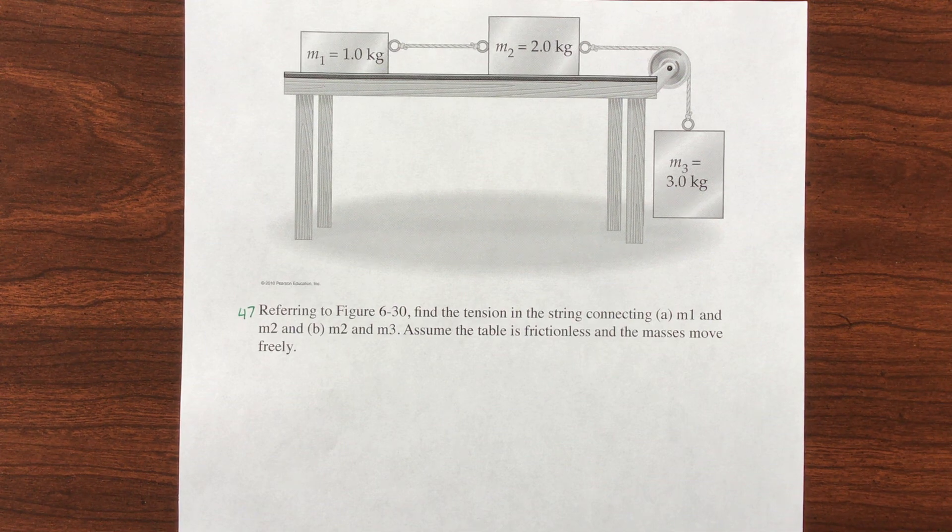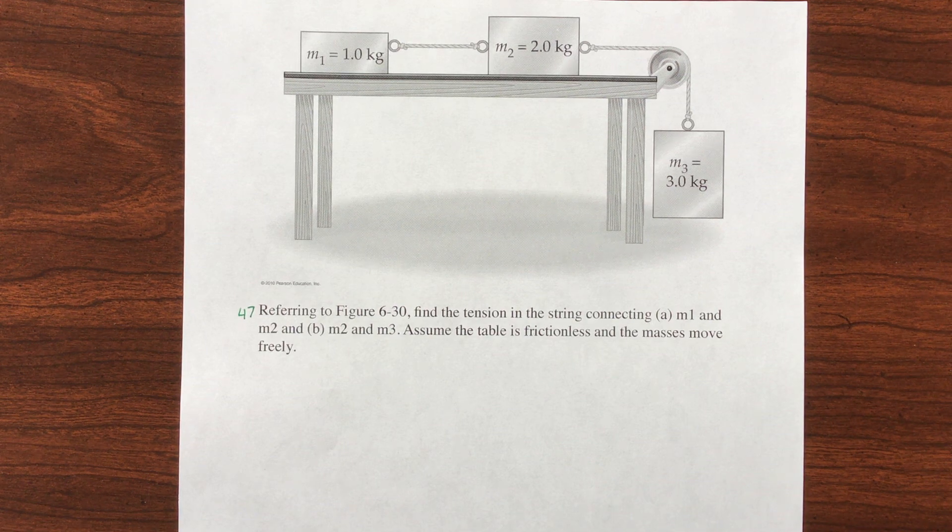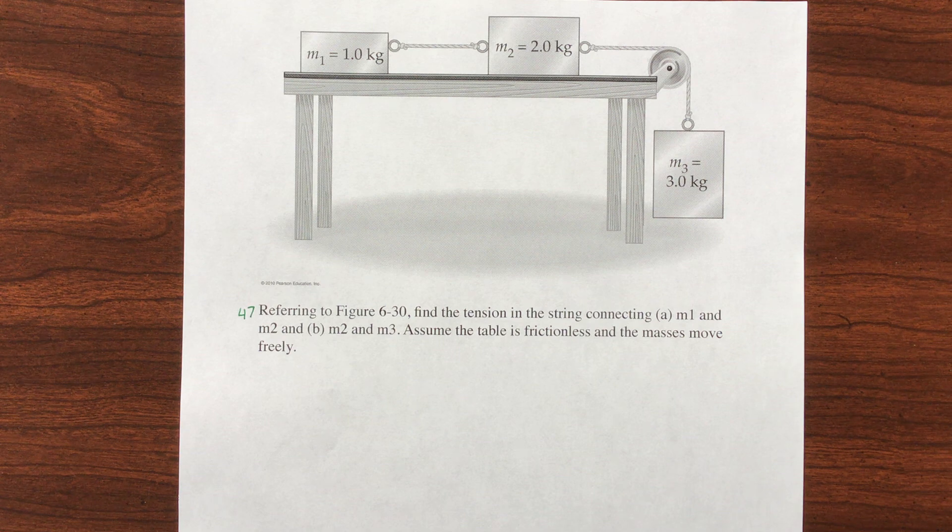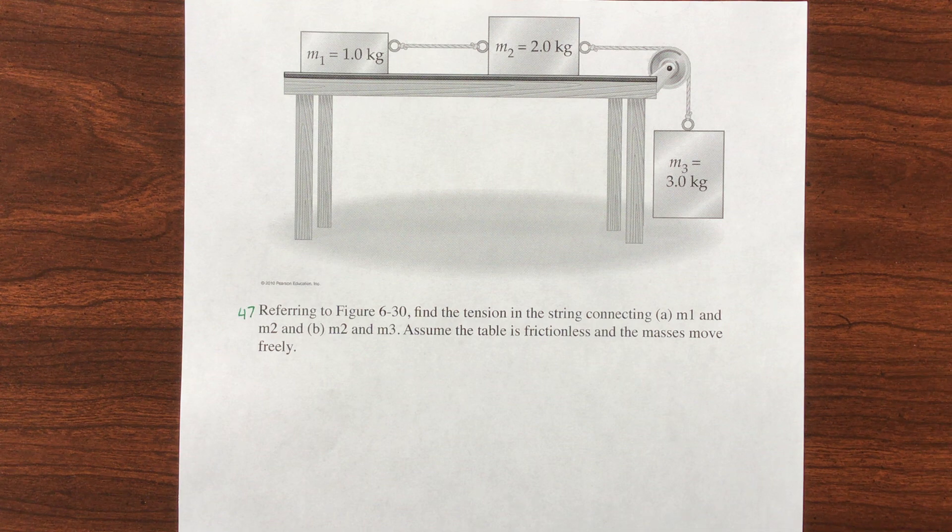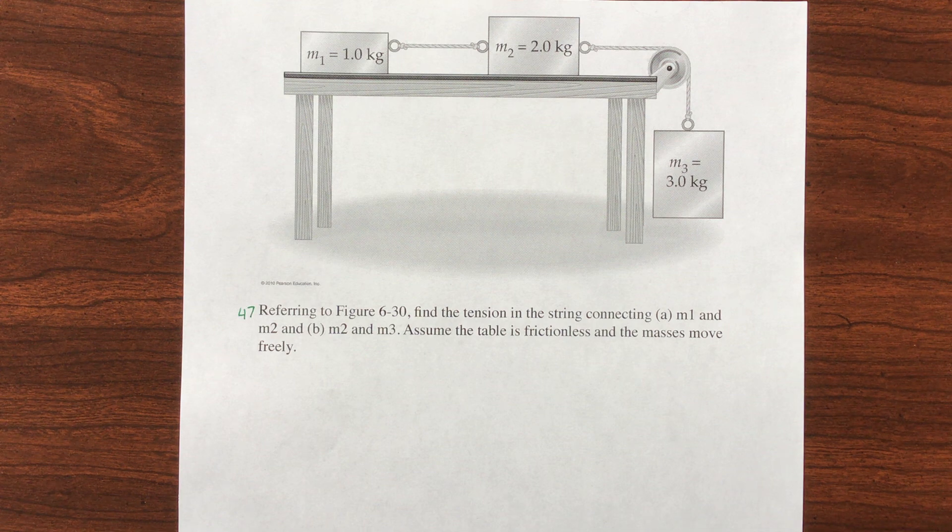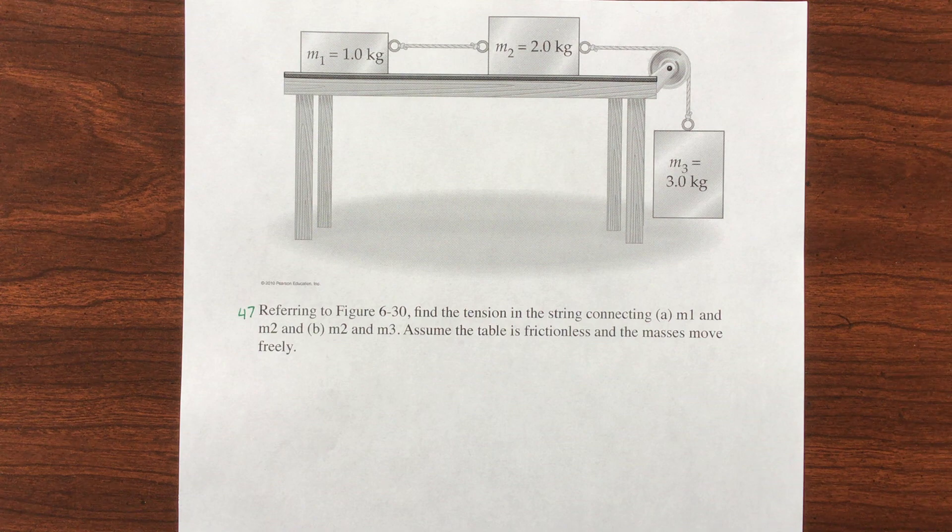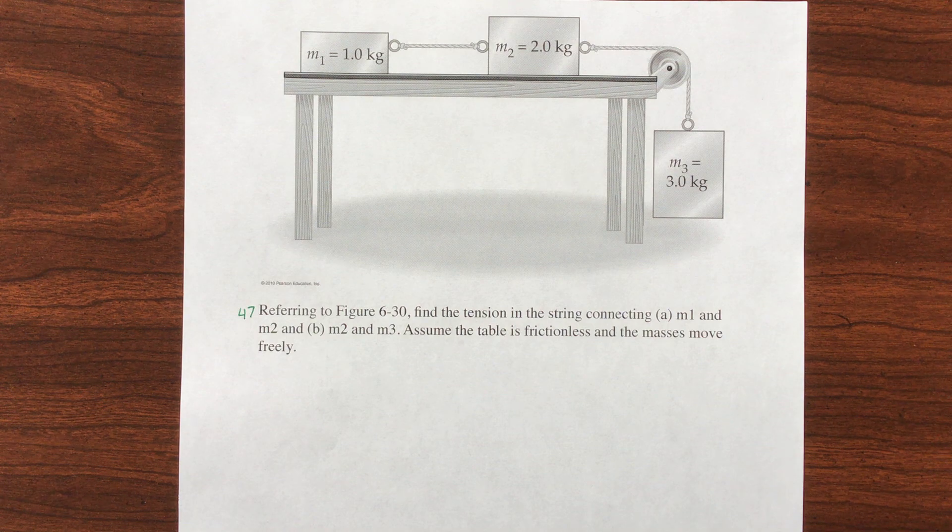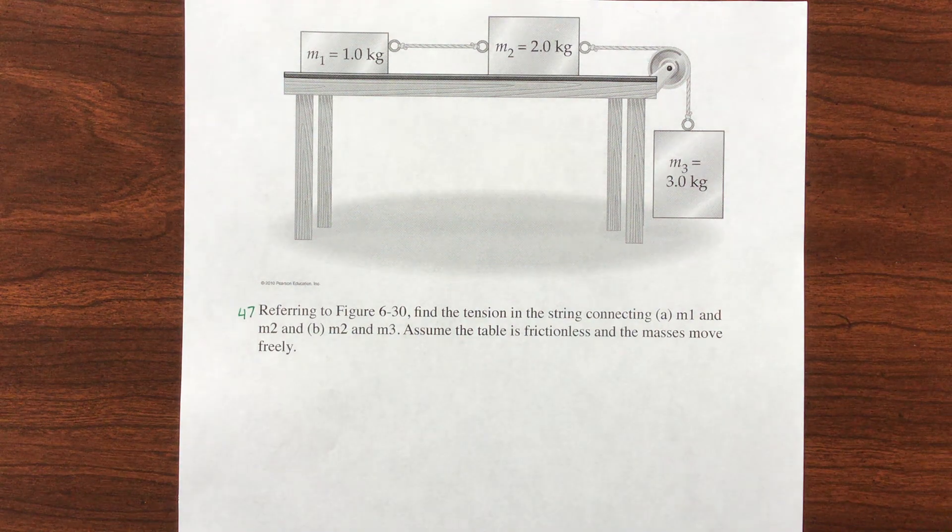Hello, this is question number 47 in Walker Physics chapter 6, in the end of chapter questions. The question says, referring to the picture, find the tension in the string connecting the M1 and M2 blocks and the tension connecting the M2 and M3. Assume the table is frictionless and the masses move freely.